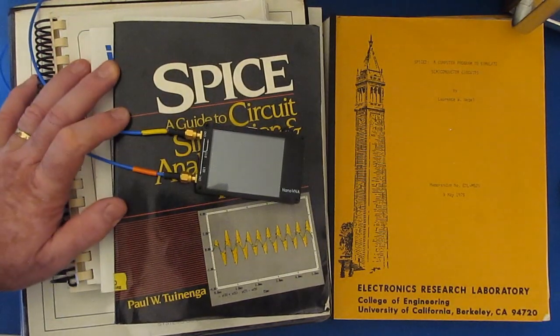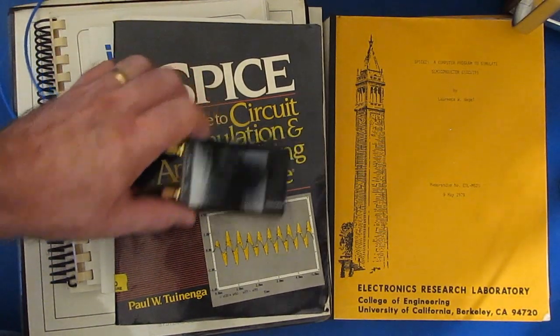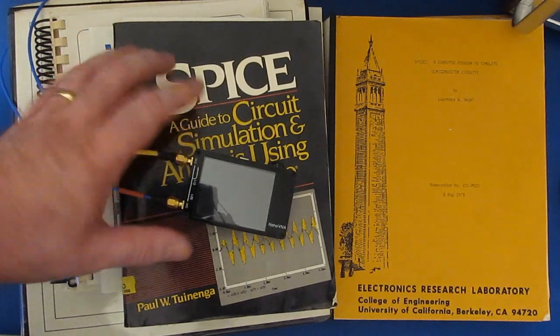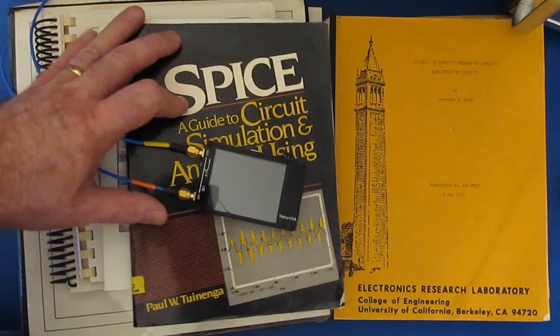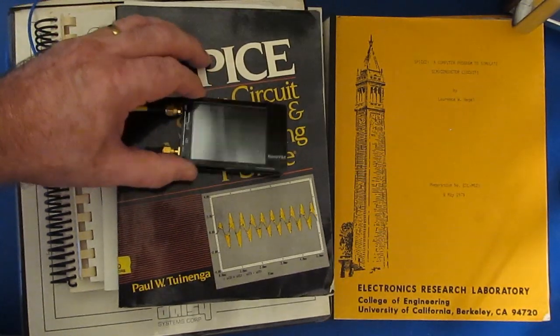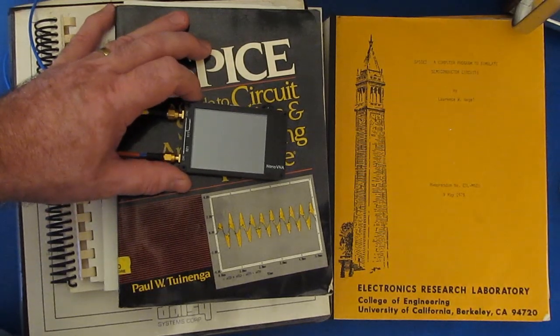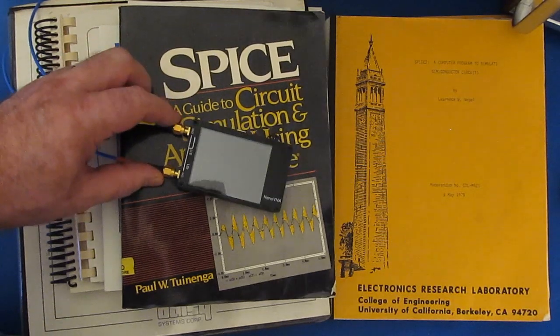PSPice had something I think it was called a black box model. Basically you would import your touchstone file into that. And then that would give you a graphical representation of your model. You could plop that into your schematic and then include that with the main simulation. When I was looking at their original software I saw that it did support touchstone. I thought do I want to add that to my lab view software.